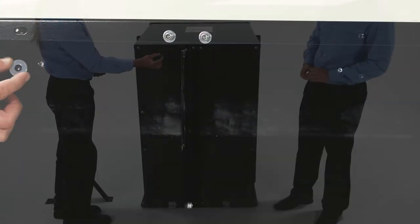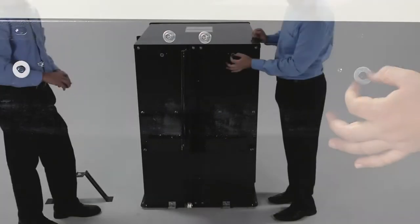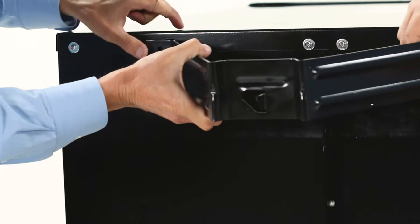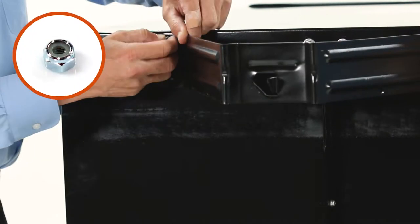Now, slide 1 1⁄4-inch washer onto each rear latch-stand bracket stud. Then, align the latch-stand bracket as shown and secure it using 4 1⁄4-inch nylock nuts.